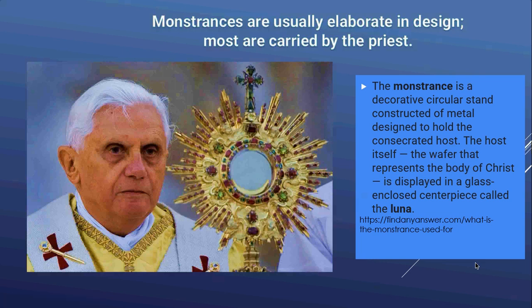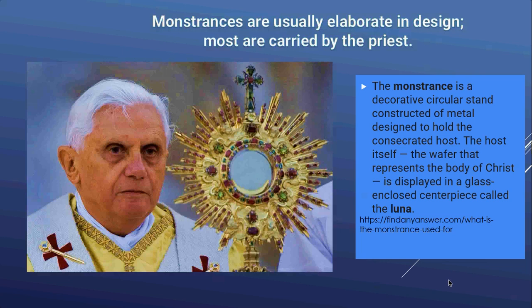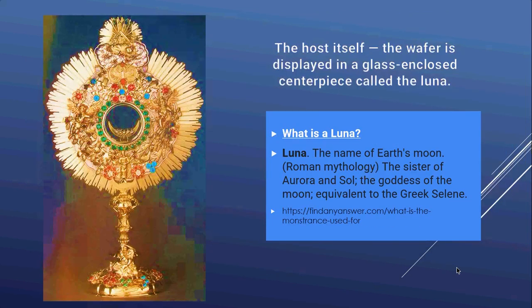The monstrance is usually elaborate in design and is carried by Catholic priests. The monstrance is a decorative circular stand constructed of metal, designed to hold the consecrated host. The host — the wafer they say represents the body of Christ — is displayed in a glass-enclosed centerpiece called the 'luna.' You can see the sun rays, the sun disk, and in the center is the moon disk.